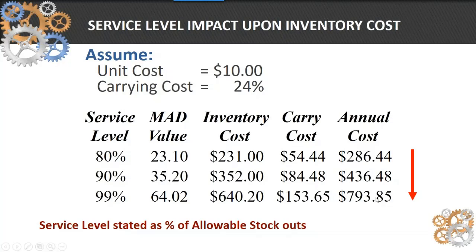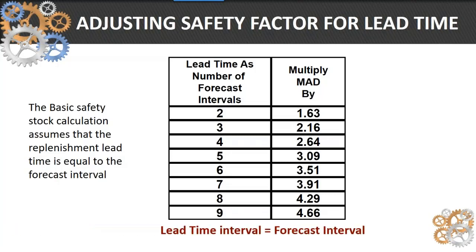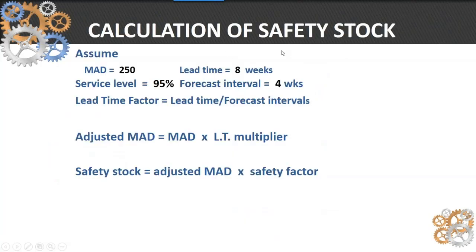The higher the service level, the more inventory you're going to need. You then want to adjust that mean absolute deviation by a factor that accounts for the variance between the forecast interval and the lead time interval. This gives you a table of what those adjustment factors might be. Basically, you're going to modify your mean absolute deviation by that forecast period adjustment factor.